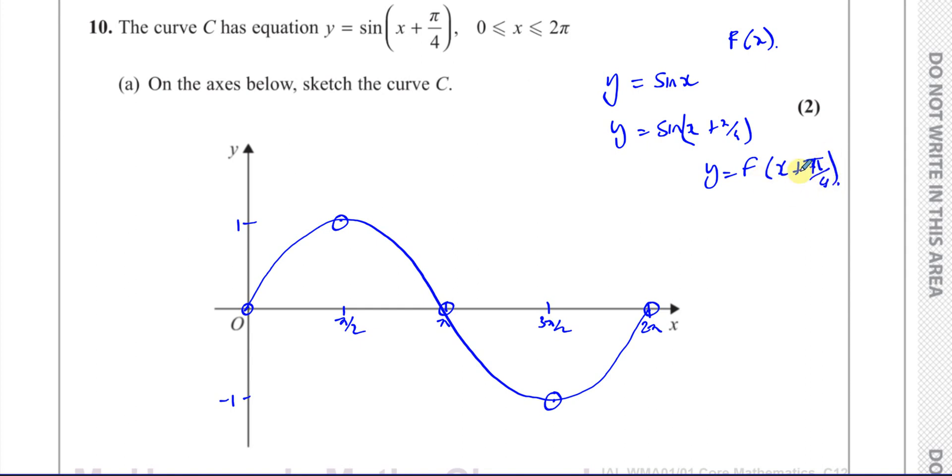This is a transformation where it's inside the function. It's f of X plus A. That transformation is a translation, where the movement or the change happens in the horizontal direction because it's inside the function. If it was f of X plus A, then it would be a vertical transformation, a vertical translation. But this is horizontal.